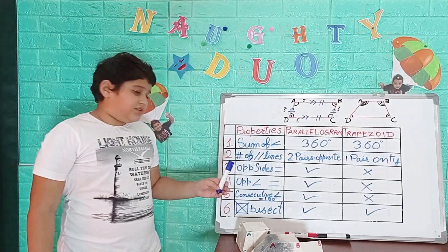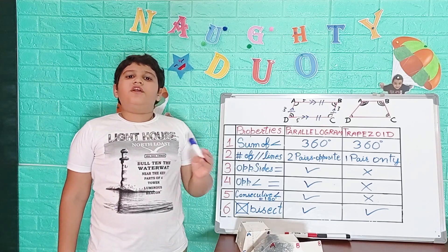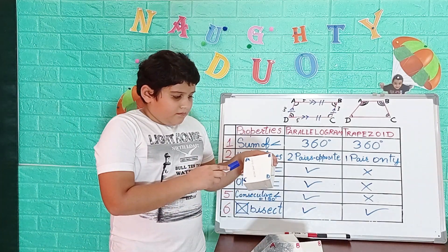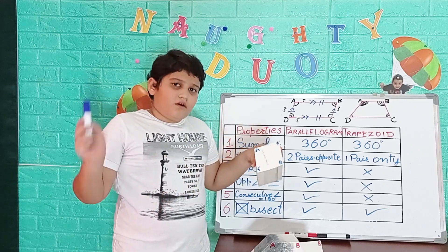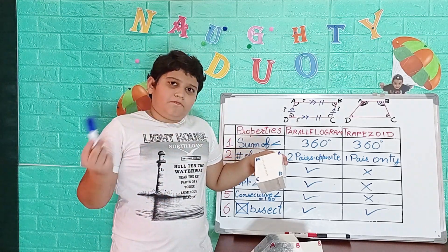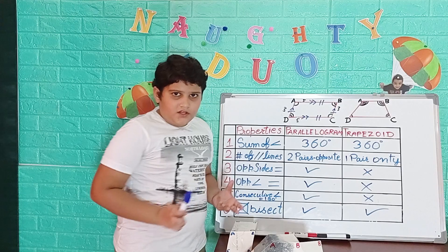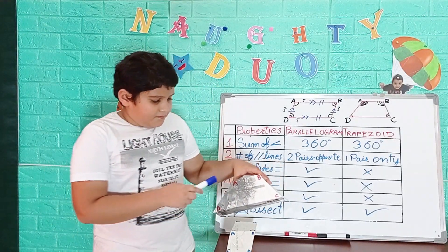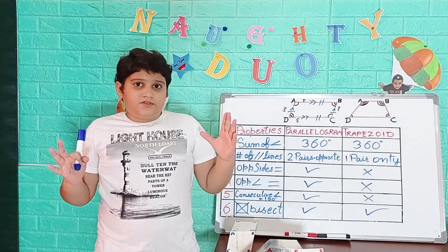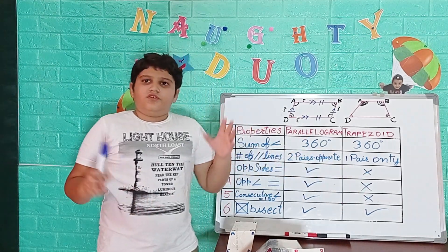Property five: the sum of every pair of consecutive angles equals 180 degrees, which is also called supplementary. For example, in a parallelogram, angle A and angle B are consecutive and supplementary because angle A is obtuse and angle B is acute. This property is true for the parallelogram. But for the trapezoid, if A and B are both obtuse, they cannot sum to 180 degrees, so this property is false for the trapezoid.